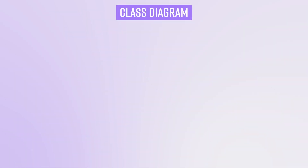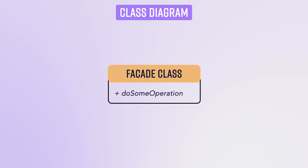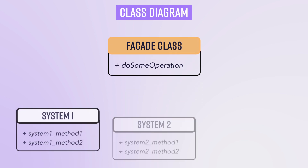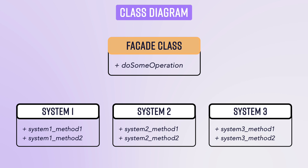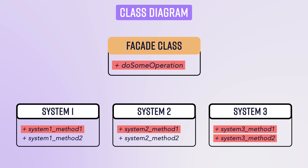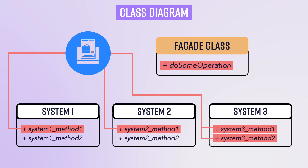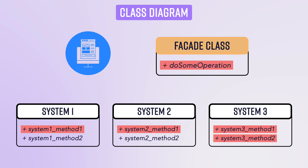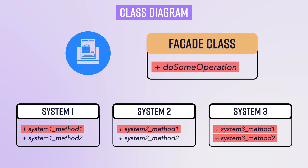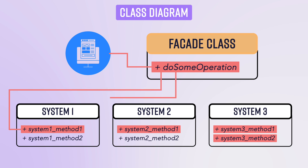If you look at the class diagram of facade design pattern, there is a facade class which exposes one or two functions to carry out some particular operation. Then there are some hidden subsystems required to carry out this operation. One or multiple functions from each of these subsystems might be needed. But instead of the client calling these different subsystems one by one or making complicated calls, a facade layer is placed between the client and the subsystems, hiding all that complexity.